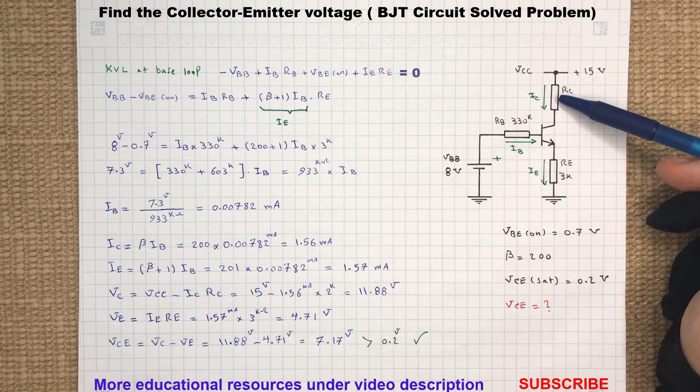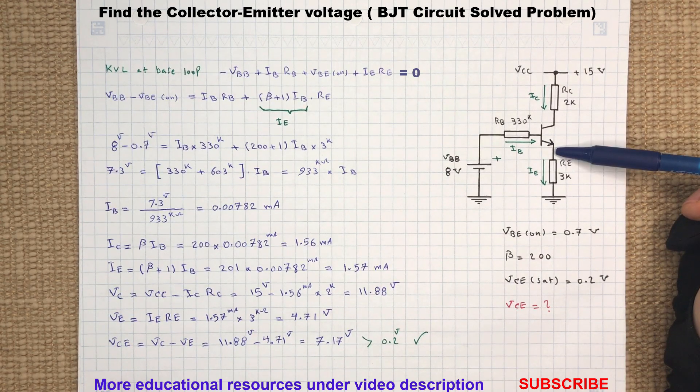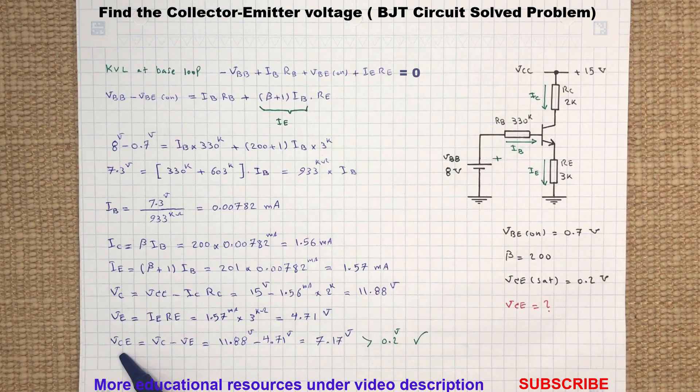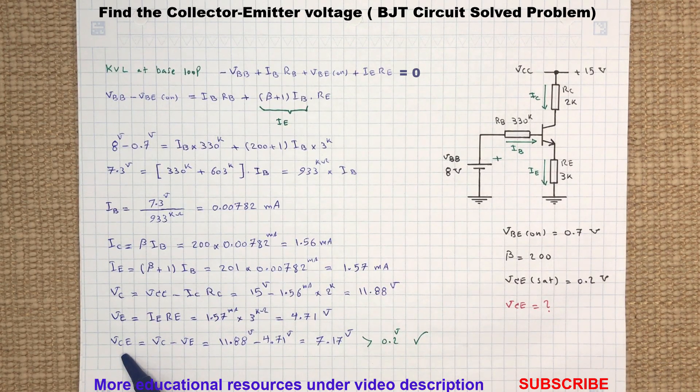The voltage at the emitter is the voltage across resistor RE, and to determine that we just need to follow Ohm's law. The voltage drop across collector-emitter will be the voltage at the collector minus the voltage at the emitter terminal.